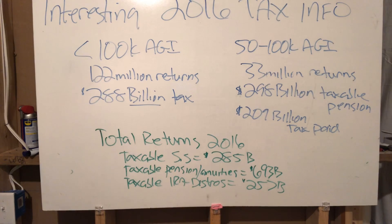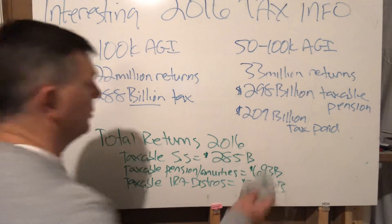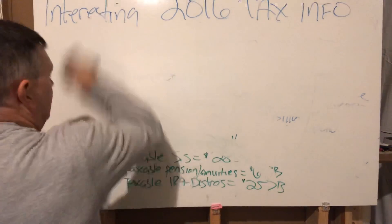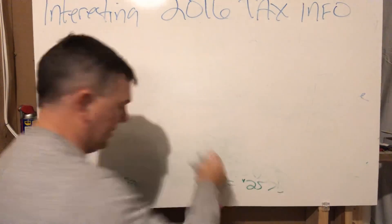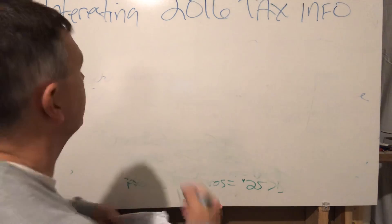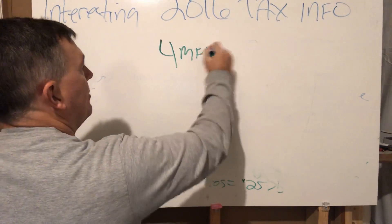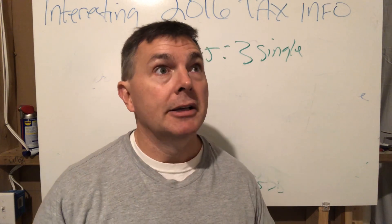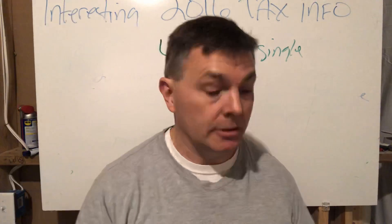If you have a provisional income of over forty four thousand bucks and you're married, 85 percent of your Social Security will be subject to income tax. For every four married filing jointly, we have three single taxpayers. Total AGI for 50 to 100k.